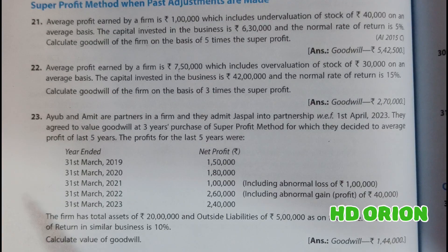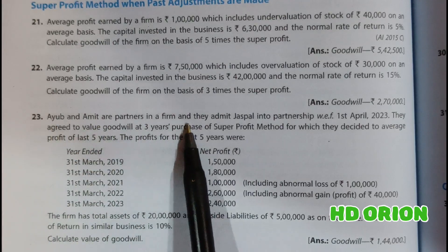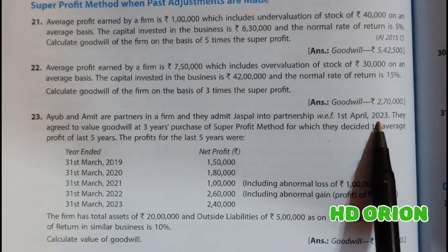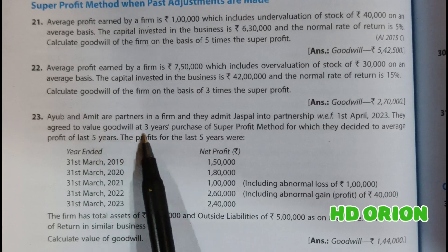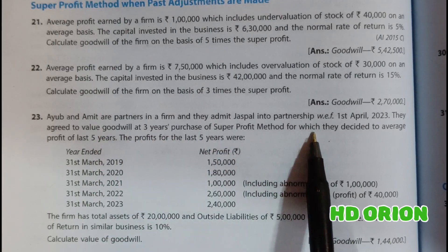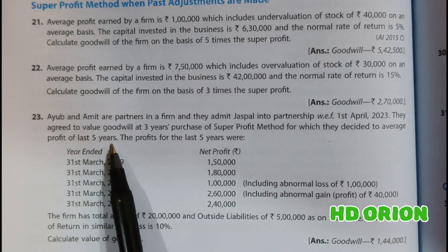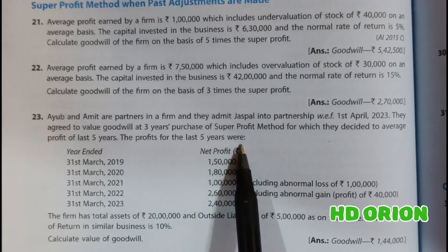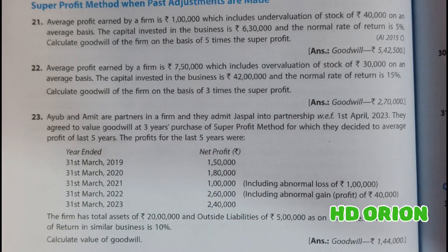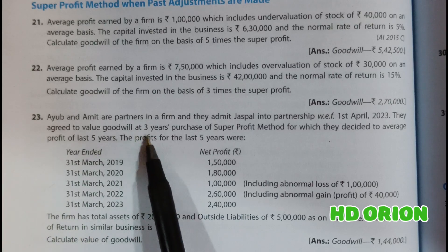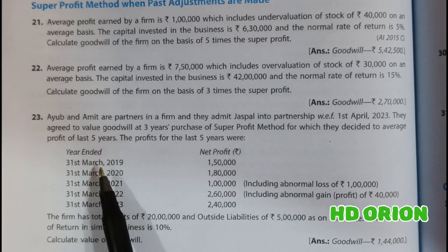Question Number 23: Ayub and Amit are partners in a firm and they admit Jaspal into partnership with effect from 1st April 2023. They agreed to value goodwill at three years' purchase of super profit, for which they decided to use the average profit of the last five years. When a new partner is admitted, the firm has to calculate goodwill, so goodwill is to be calculated at three years' purchase of super profit.